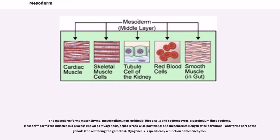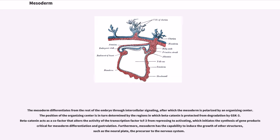Myogenesis is specifically a function of mesenchyme. The mesoderm differentiates from the rest of the embryo through intercellular signaling, after which the mesoderm is polarized by an organizing center. The position of the organizing center is determined by the regions in which beta-catenin is protected from degradation by GSK3. Beta-catenin acts as a cofactor that alters the activity of the transcription factor TCF3 from repressing to activating, which initiates the synthesis of gene products critical for mesoderm differentiation and gastrulation.